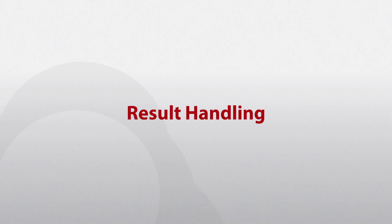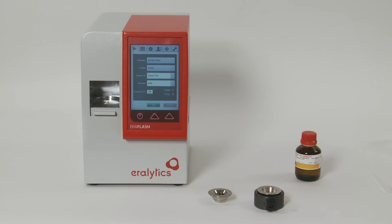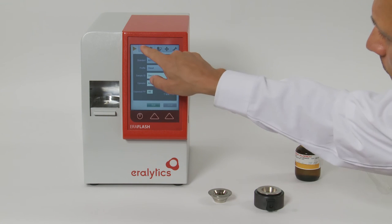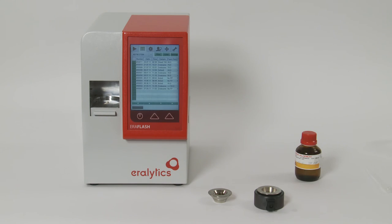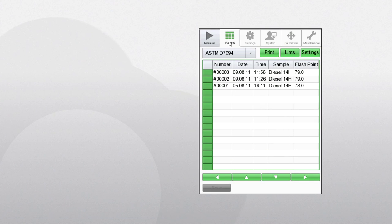In the result menu, several thousand results can be stored and reviewed. Simply go to the result menu where each line displays a result. Browse through the result memory using the cursor keys at the bottom of the list. To view the pressure development graphic of an older measurement, press the box to the left of the desired result.